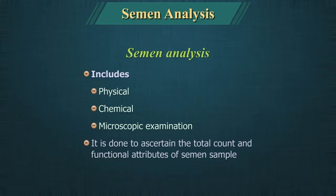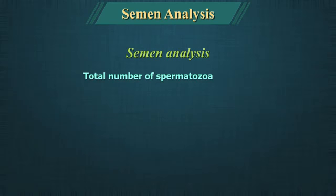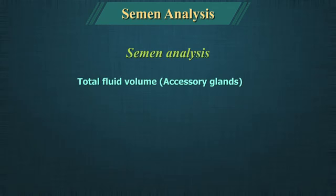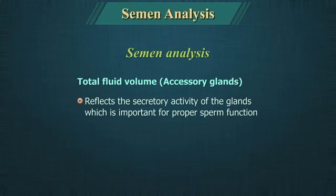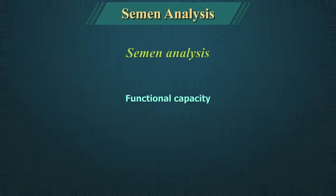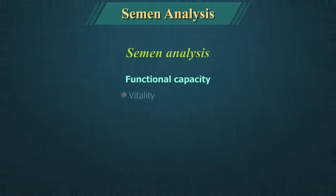Semen analysis is done to ascertain the total count and functional attributes of a semen sample. The total number of spermatozoa reflects sperm production by the testes and the patency of the post-testicular duct system. Total fluid volume contributed by the various accessory glands reflects their secretory activity, which is important for proper sperm function. The functional capacity of the spermatozoa is assessed by their vitality, motility and morphology.